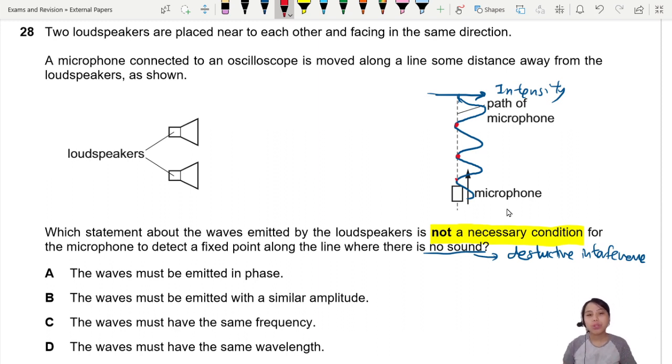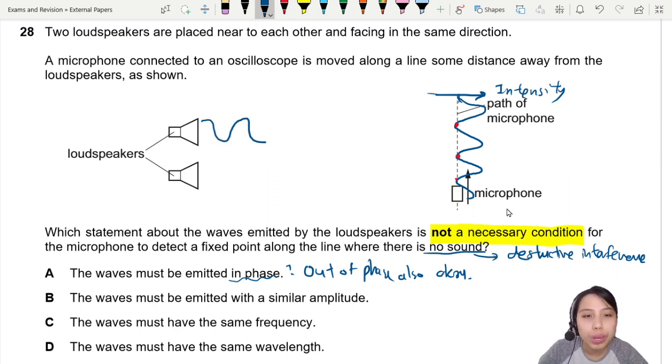The waves must be emitted in phase - is that a condition? Actually no. They can be out of phase also. From one loudspeaker I could go up-down, and the other one I can start down-up if I want to emit them out of phase.